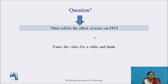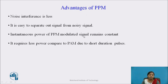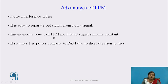Now, what is the effect of noise on PPM? Since PPM consists of constant amplitude pulses, the effect of noise is very less, and noise interference is minimal. It is easy to separate the signal from a noisy signal, and the PPM signal can be easily reconstructed even from a noise-contaminated PPM. Also, the instantaneous power of the PPM modulated signal remains constant because PPM has constant width and constant amplitude, so there is no change in the power of pulses.